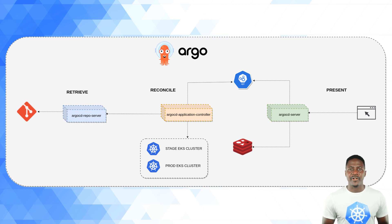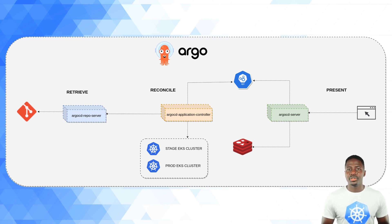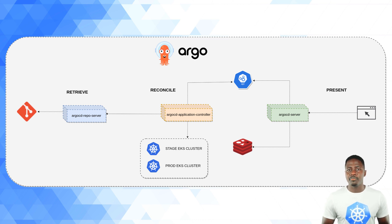We'll start off with the Retrieve phase. As the name implies, it clones the source repository and optimizes things by caching this in local storage. So whether you have raw manifests, Helm charts, or customized config files, this is where interaction with those sources happens. The responsible component is the Argo CD repo server.